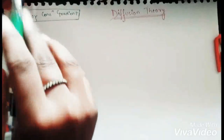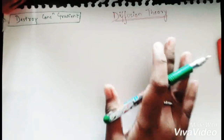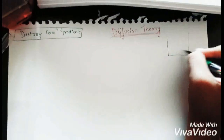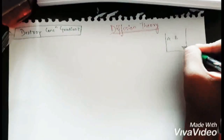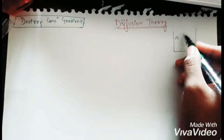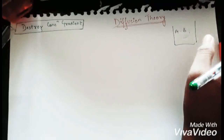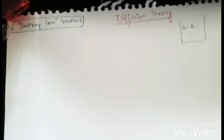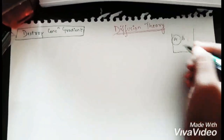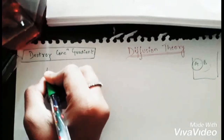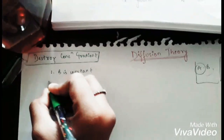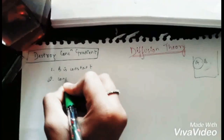Moving on to diffusion theory. We have a system which contains components A and B. Our first assumption is that B is constant — B is at equal concentration and is not undergoing mass transfer. We consider this to be a single phase system. The second assumption is that the concentration of A varies.